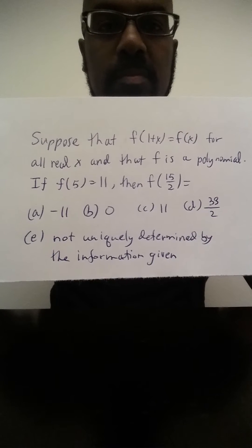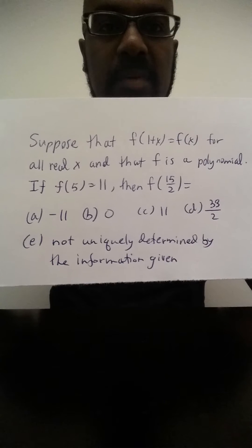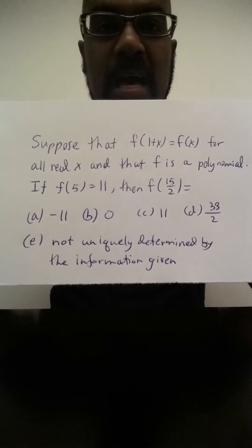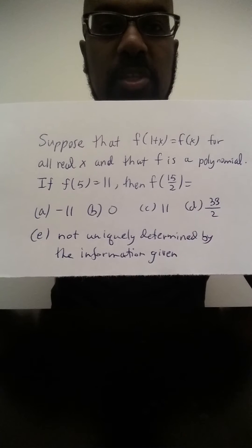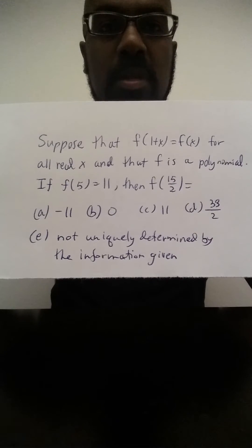a, negative 11; b, 0; c, 11; d, 33 halves; or e, there's not enough information to determine a unique answer.